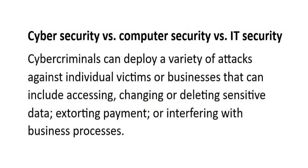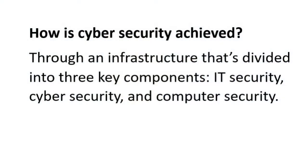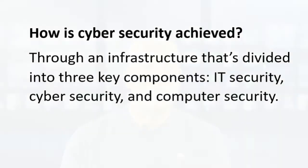So how is cybersecurity achieved? It's through an infrastructure that divides into three key components: IT security, cybersecurity, and computer security. Information technology security, also known as electronic information security, is the protection of data both where it's stored and where it's moving through your network. While cybersecurity only protects digital data, IT security protects both digital and physical data from intruders. Cybersecurity is a subset of IT security, protecting the digital data of networks, computers, and devices from unauthorized access, attacks, and destruction.